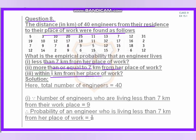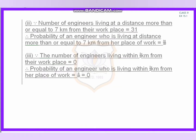The total number of engineers is 40. The number of engineers living less than 7 kilometers from the workplace is 9. The frequencies for engineers less than 7 kilometers are: 5, 3, 2, 3, 5, 6, 3, 2 — totaling 9 engineers. Therefore, the probability of an engineer living less than 7 kilometers is 9 by 40.